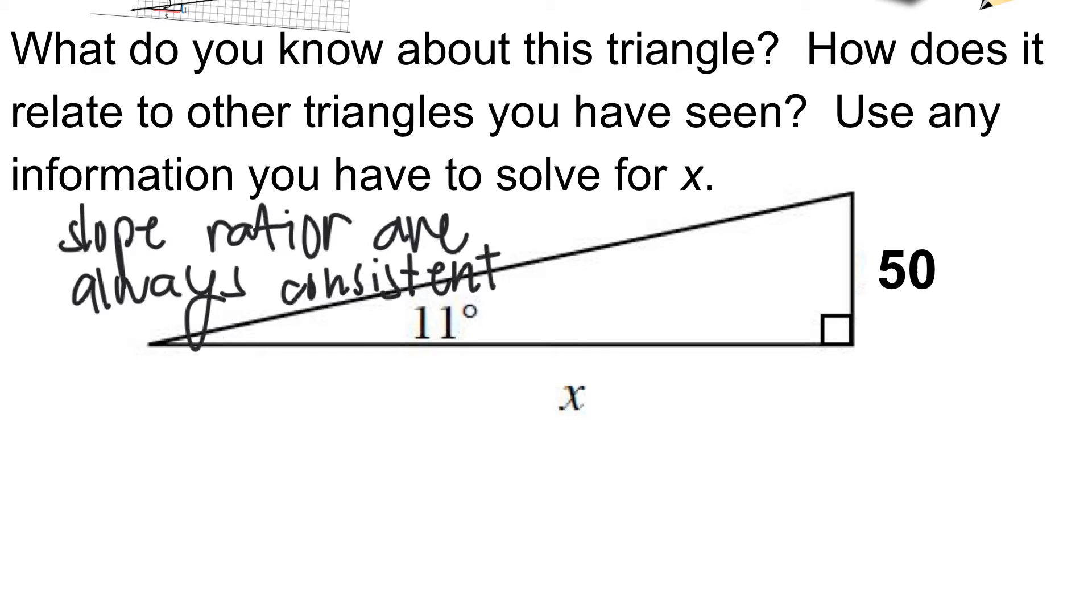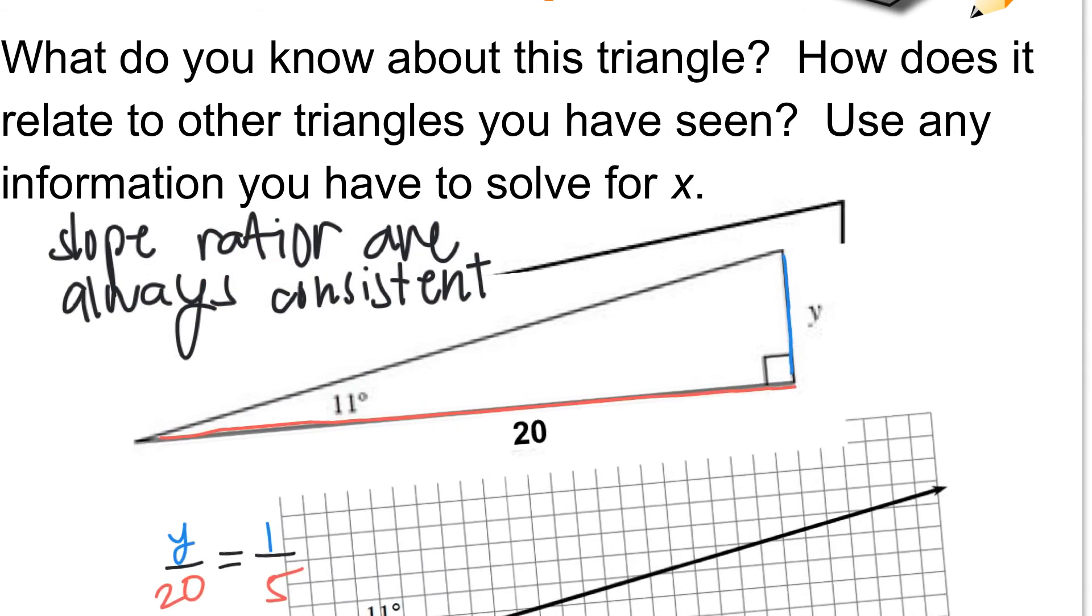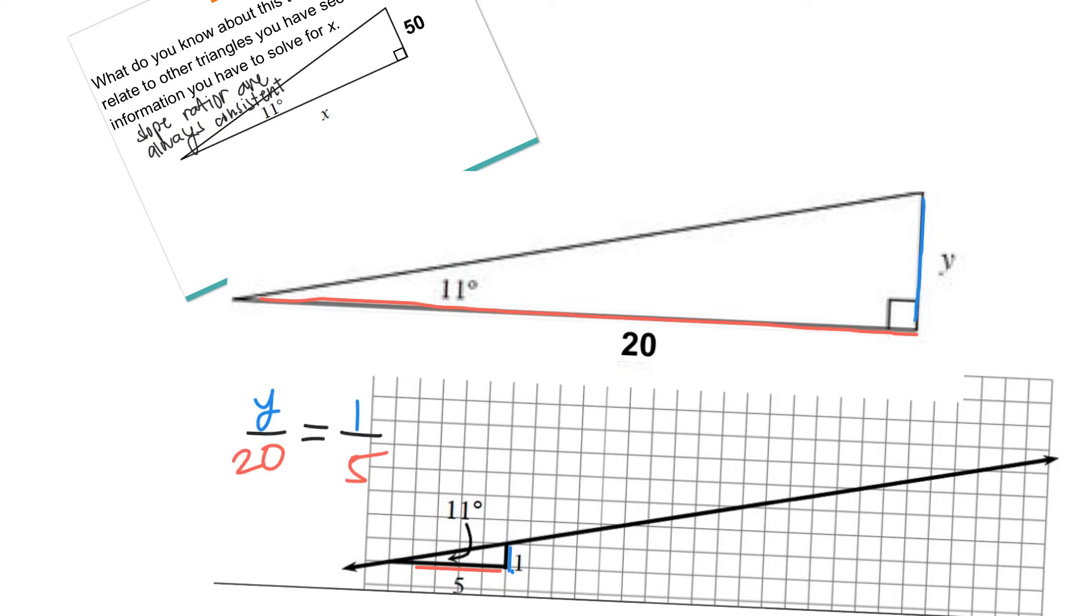Let's take a closer look at this problem from the do now. I have the slope angle, which in this case is 11 degrees. I have the change in Y, which I don't know - it's just Y - and I have the change in X, which is 20. So change in Y over change in X equals Y over 20, which equals 1 over 5.